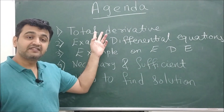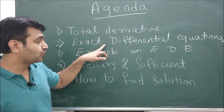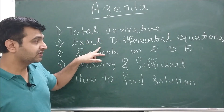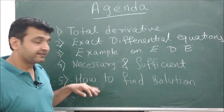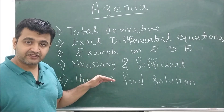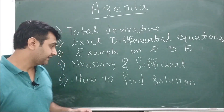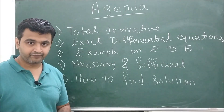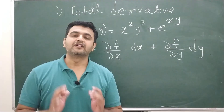Let's see what the agenda for today's talk is. First, we will see the concept of total derivative, because we need that to understand exact differential equations. Once we see both things, I will take an example so you understand the definition. Then we will see a theorem dealing with the necessary and sufficient condition for when a differential equation is exact, and finally an algorithm on how to find the solution — all in the next 10 to 12 minutes.